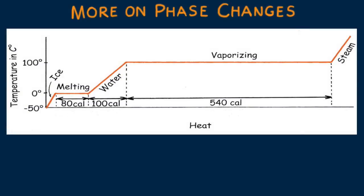In previous lessons we have discussed specific heat and heats of fusion and vaporization. Let's view this in more detail with this graph of temperature versus heat for one gram of water undergoing phase changes.